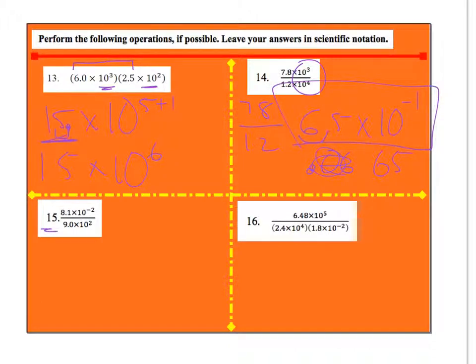For number 15, take a look. Negative exponents still become negative exponents. So 8.1 divided by 9.0 becomes 0.9. Negative 2 minus 2 becomes times 10 to the negative fourth. But now this is smaller than 1, so I've actually got to move this over 1 and I'm going to add one up here, so this becomes 9 times 10 to the negative third.